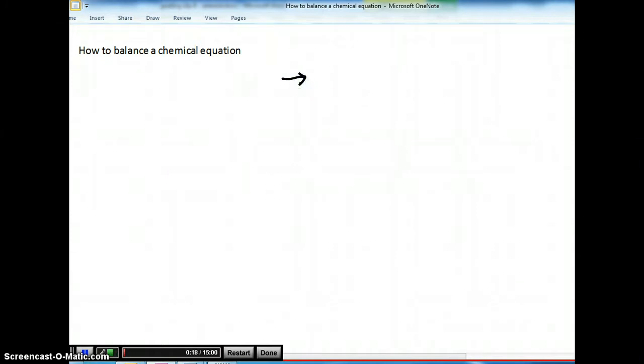What this arrow does is that it's saying everything on the left of the arrow is the before, the reactants that are mixed together. Everything that comes to the right side of the arrow is the after, the product that is being made.